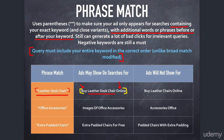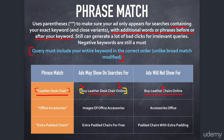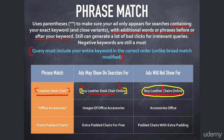My ad will not show for "buy leather chairs online." Why? Because my phrase match keyword is "leather desk chair." While we have "leather" and "chair," we're missing the word "desk." So "buy leather chairs online" is not eligible to trigger my ad — something you need to think about very carefully with phrase match. You're inevitably going to knock out some potentially very good keywords.